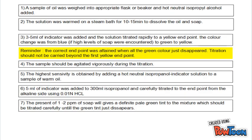Methodology. A sample of oil was weighed into an appropriate flask or beaker and hot neutral isopropyl alcohol added. The solution was warmed on a steam bath for 10 to 15 minutes to dissolve the oil and salt. 3 to 5 ml of indicator was added and the solution titrated rapidly to a yellow endpoint. The color change was from blue to green to yellow. The sample should be agitated vigorously during the titration.